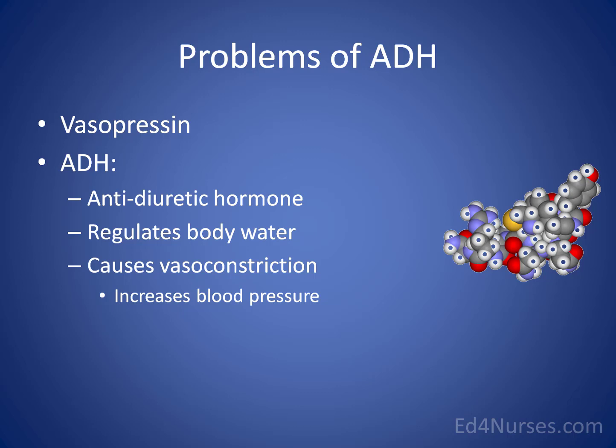One reason we get confused with ADH is that it involves a kind of double negative. When a patient has antidiuretic hormone active, the patient is not diuresing — they are retaining fluid. That's how it controls body water.